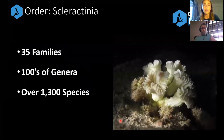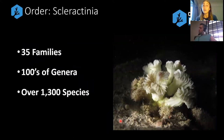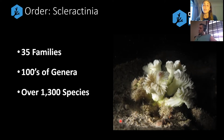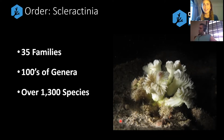Within the Scleractinia, we've got 35 families of corals. Within that, there are hundreds of genera, and within them there are over 1,300 species. For the sake of practicality, I identify things to genus level as opposed to species level. It's also a bit more realistic in terms of how many Latin taxonomic names you might actually be able to fit in your brain.